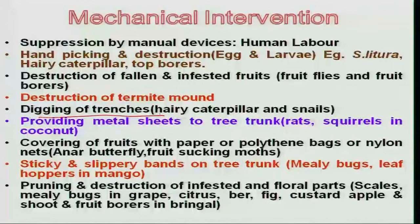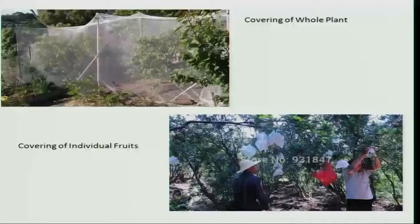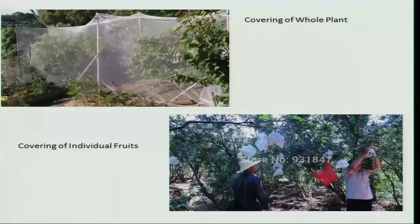Another important technique is covering the fruits, particularly in fruit crops with higher economic value, for example pomegranate or citrus. These are attacked by fruit-sucking moths — particularly pomegranate, where even slight damage causes the fruit to be rejected in the market. Because of the high economic value, complete coverage of the plant with nylon net, or if labor is available and economical, covering individual fruits with paper bags, works out to be a more economical and effective technology in reducing pest damage.